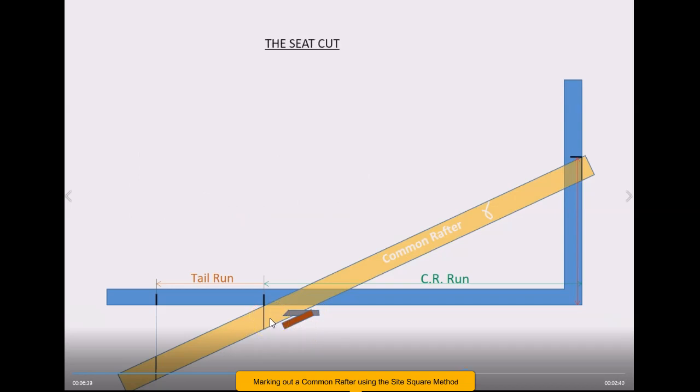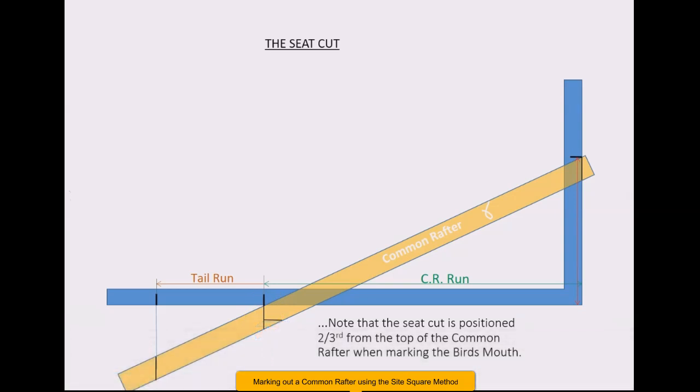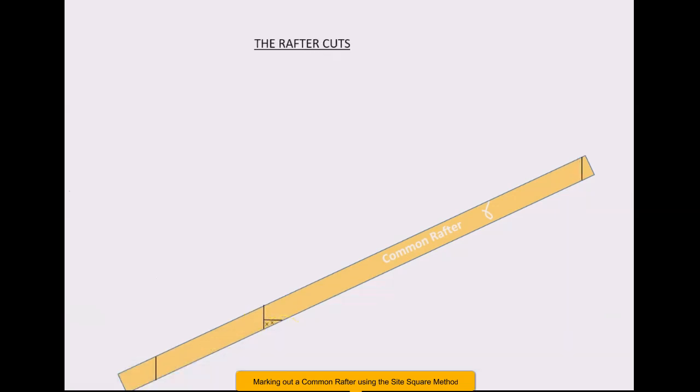Of course you measure down two-thirds, and really truly you don't want to go any more than a third into the rafter with this bird's mouth, otherwise you will weaken the rafter at this point. You need to be very careful you don't go cutting past that. So a third is the most I recommend. That means it's two-thirds above of course. So there's your bird's mouth marked out.